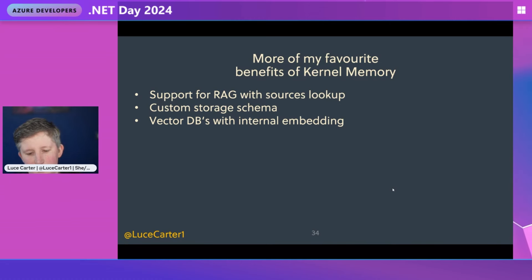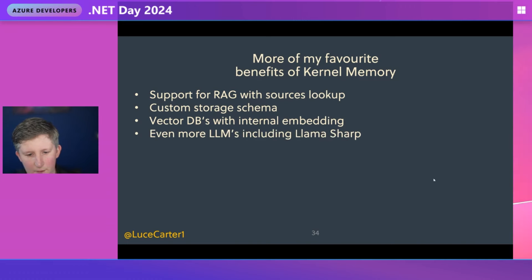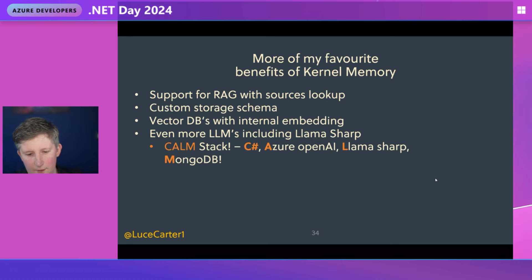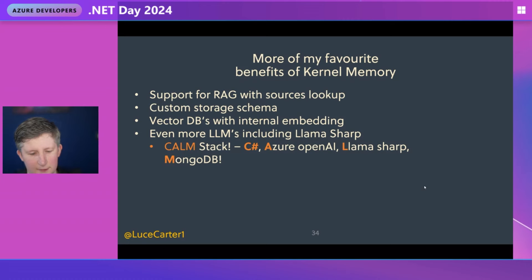With tools like OpenAI, Azure OpenAI, Hugging Face, and others to generate embeddings, you can now store them in MongoDB Atlas and Kernel Memory will be able to use those directly. We can even use more LLMs including Llama Sharp, which means we can have what I'm naming here and now — TM — CalmStack: C#, Azure OpenAI, Llama Sharp, and MongoDB. Or MongoDB, Azure OpenAI, C#, and Kernel Memory. Semantic Kernel has a MongoDB connector — so what about Kernel Memory?